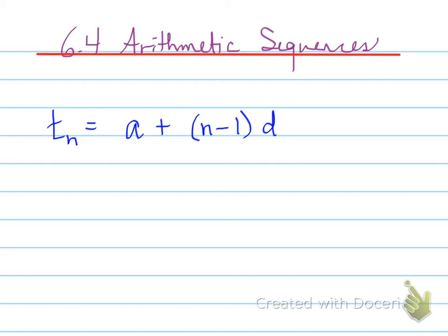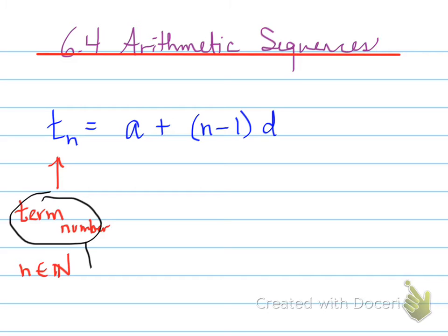Now the important part: 6.4, arithmetic sequences. This particular formula you need to memorize exactly as you see it here: TN = a + (n - 1) × d. I'm going to define each part so you understand what the arithmetic sequence is all about. TN represents the term — T is the term, N is the number, where N belongs to the natural numbers. TN is interpreted as the value at that particular term number.